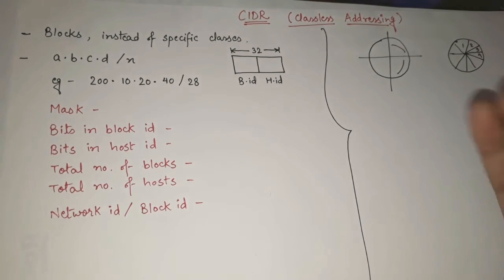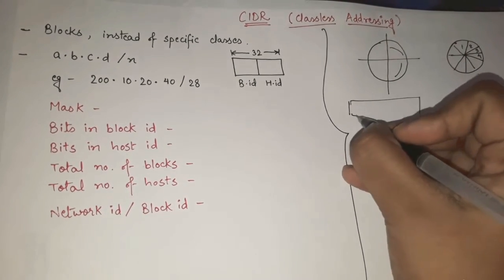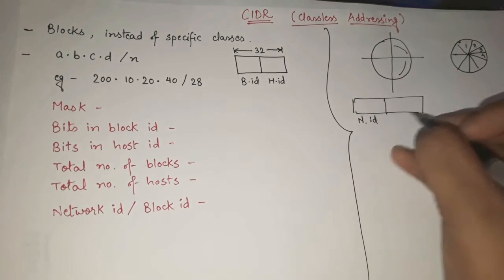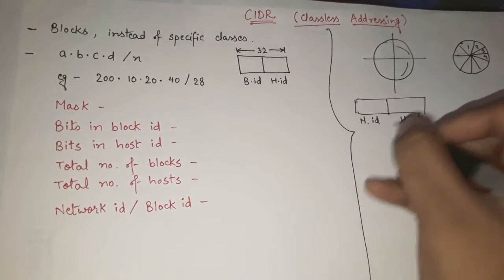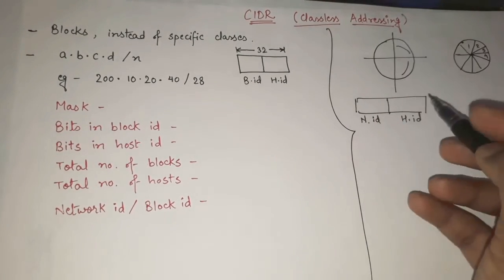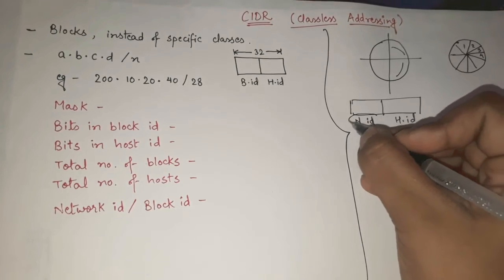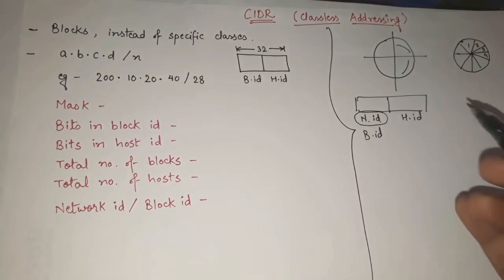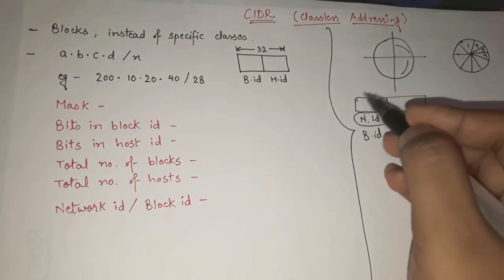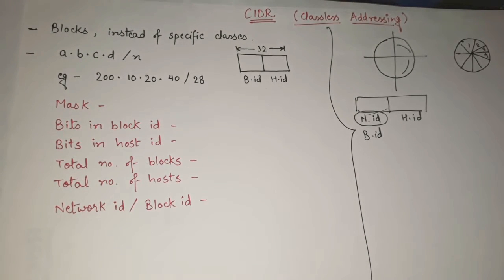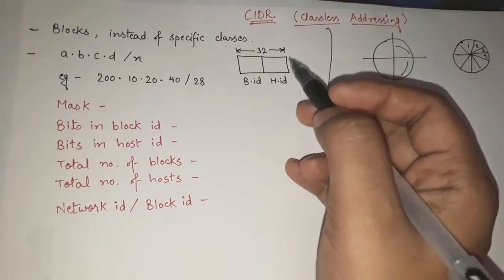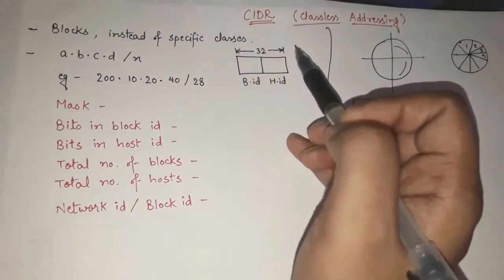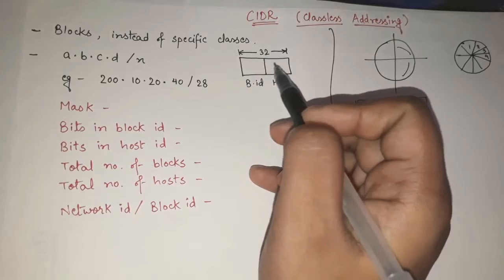In classful addressing, the whole IP address was divided into two parts: the prefix was the network ID and the later part was the host ID. In classless addressing, we don't have any specific network class, so the whole IP address is still divided into two parts — but the first part, instead of network ID, we call it block ID, which denotes which specific block we are assigning. Total 32 bits will be divided such that the beginning part is the block ID and the later part is the host ID.